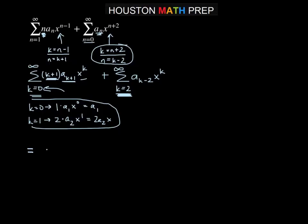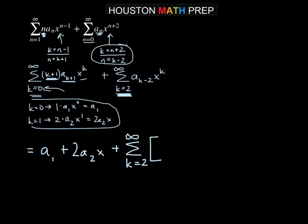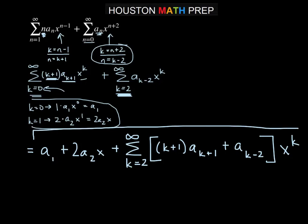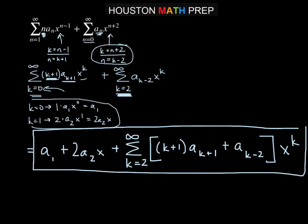So we get a sub 1 plus 2 a sub 2 times x out front, plus the sum from k equals 2 to infinity of (k plus 1 times a sub k plus 1 plus a sub k minus 2) times x to the k. The other stuff out front came from bumping one of the power series forward two terms - those were the terms we got from k equals 0 and k equals 1 before the indices matched.